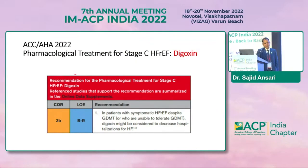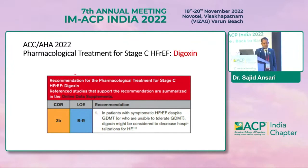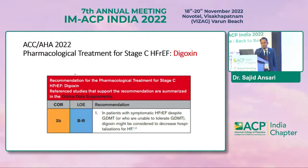Regarding ACC/AHA recommendations — the major authority for drug classification — for pharmacological treatment of stage C HFrEF patients (those with structural/functional heart disease who are strongly symptomatic), digoxin carries a class 2b indication with level of evidence B-R. In patients with symptomatic HFrEF despite guideline-directed medical therapy (GDMT), or who are unable to tolerate GDMT, digoxin might be considered to decrease recurrent hospitalization.